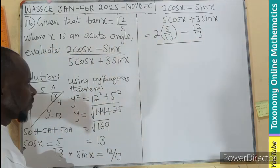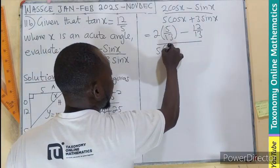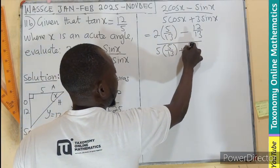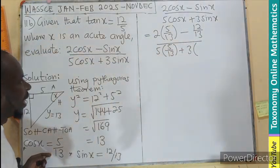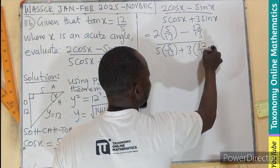which is 12 on 13, all divided by 5 multiplying the cos again, which is 5 on 13, plus 3 multiplying the sine, which is also 12 on 13.